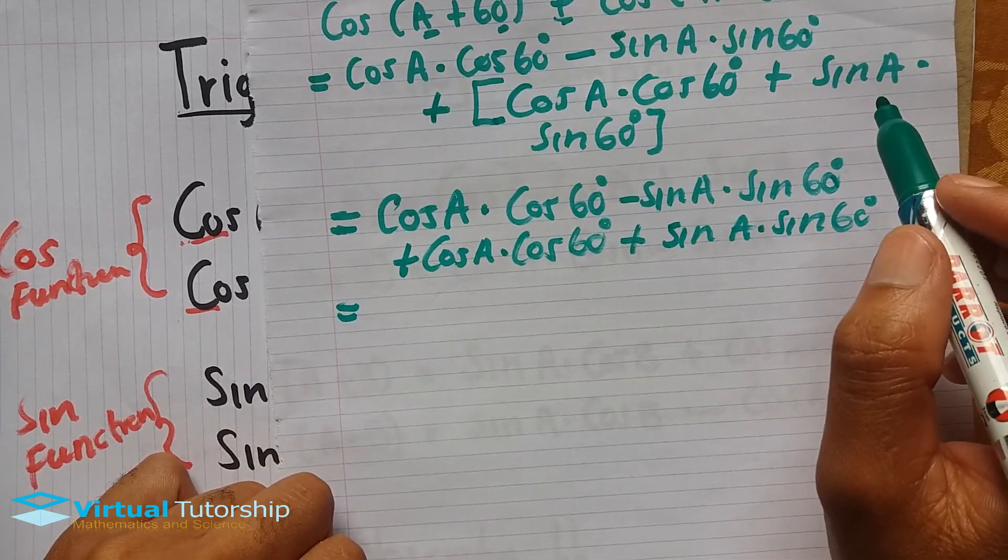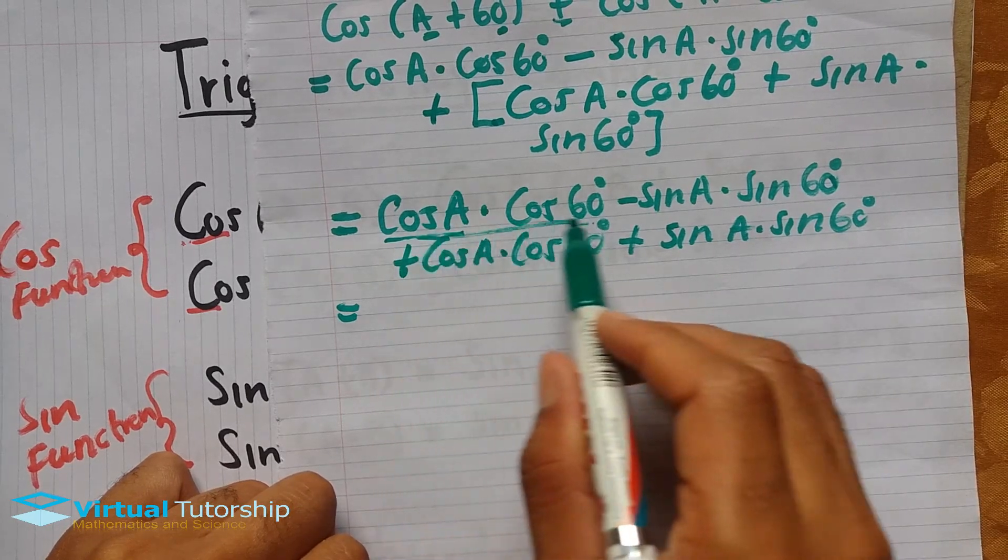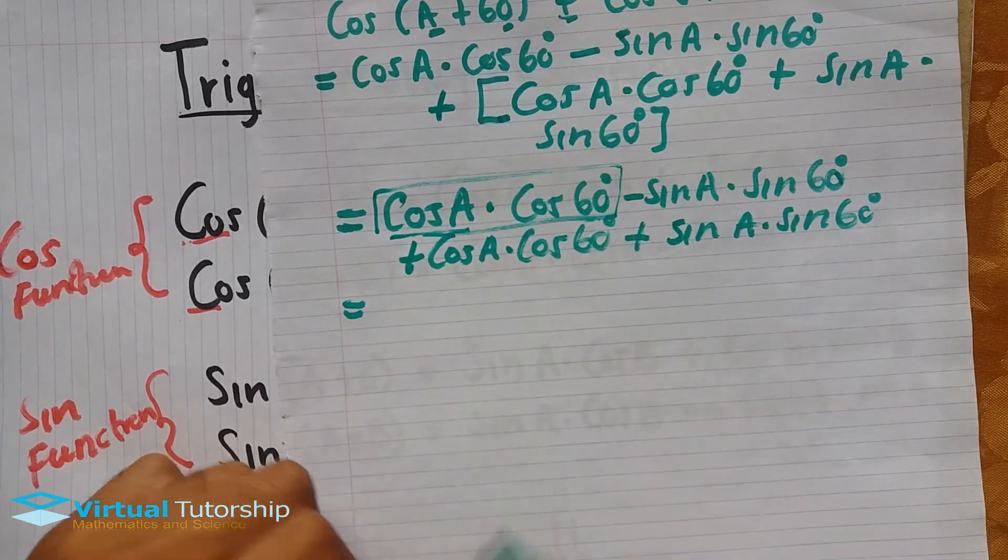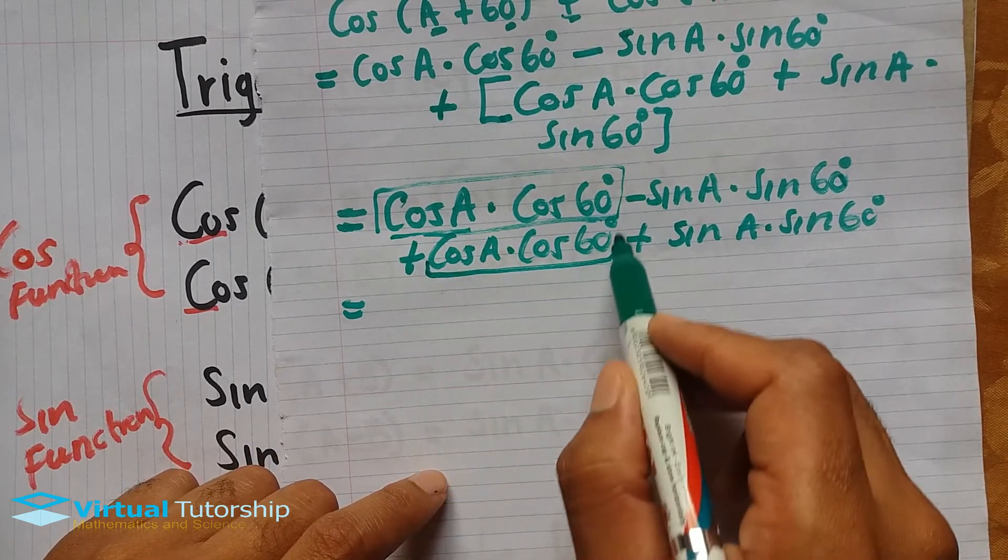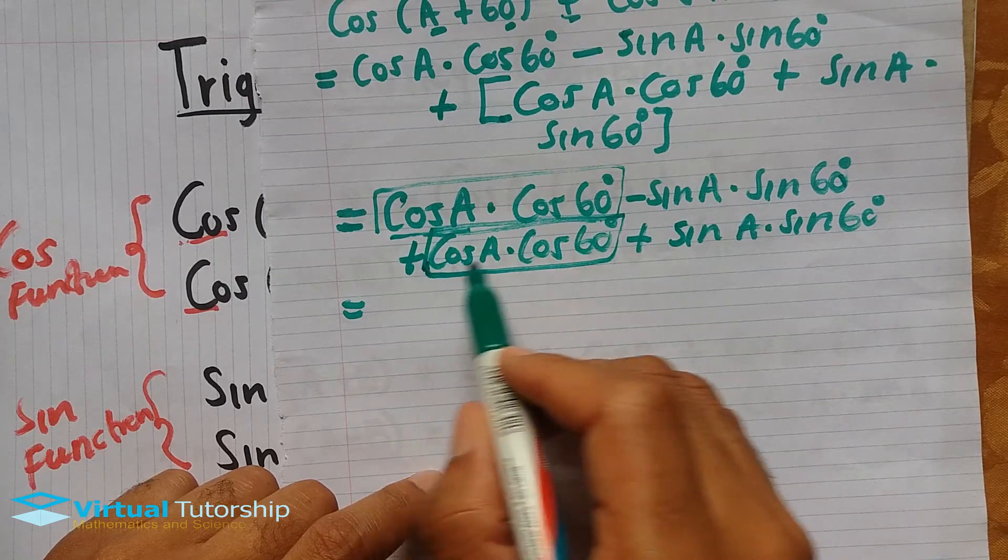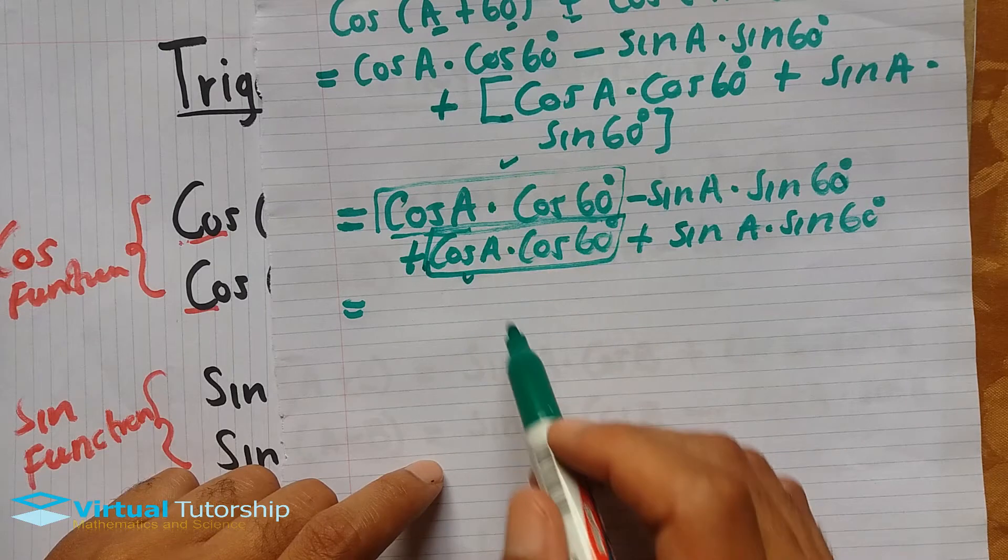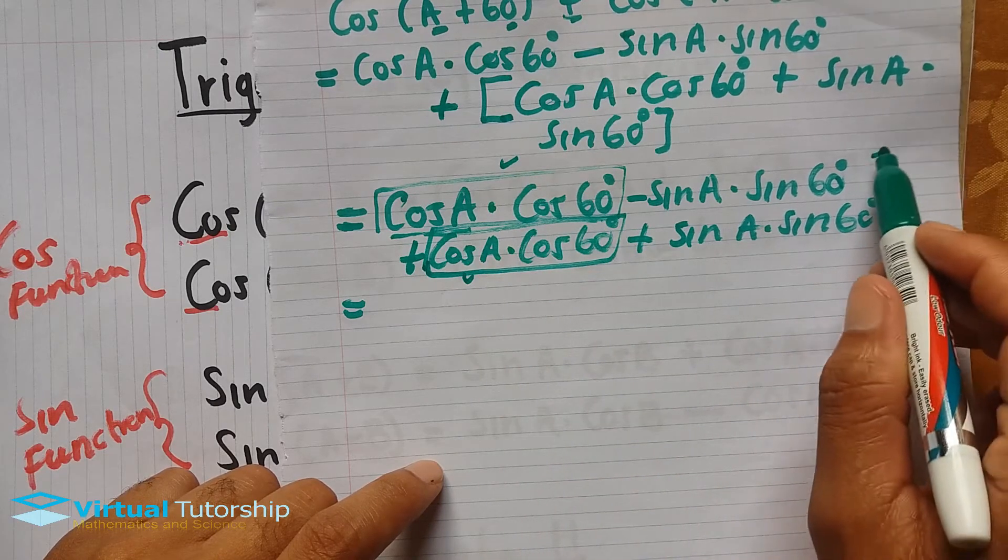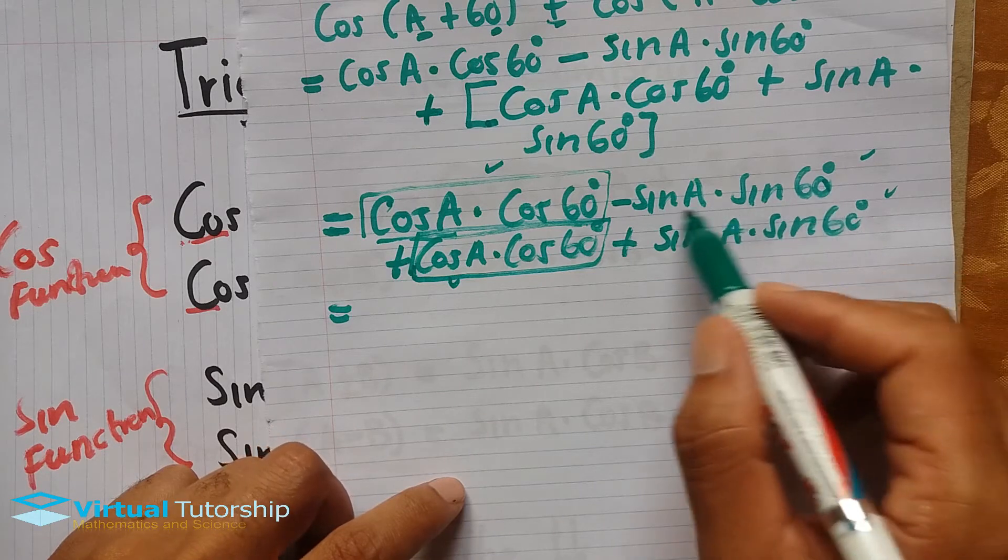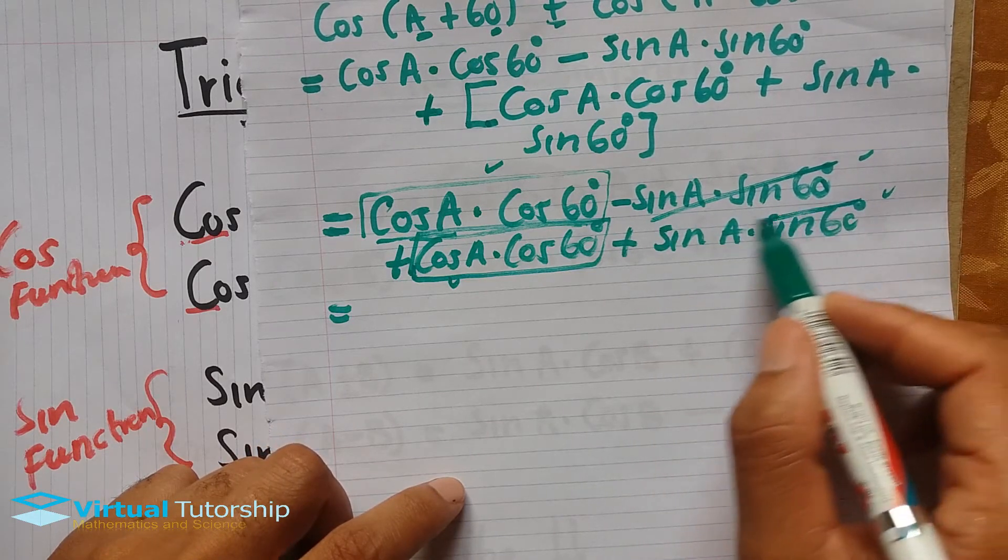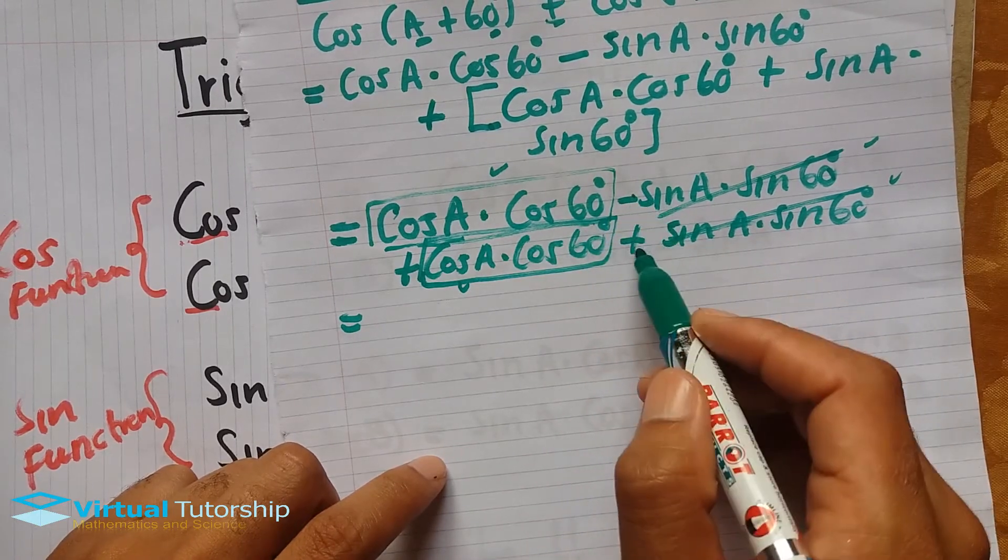Now combine like terms. cos(A)·cos(60°) is one term, this is one term. These are like terms. They're slightly different because of the difference in signs, but one is positive so when you add them again, the total is 2cos(A)·cos(60°).